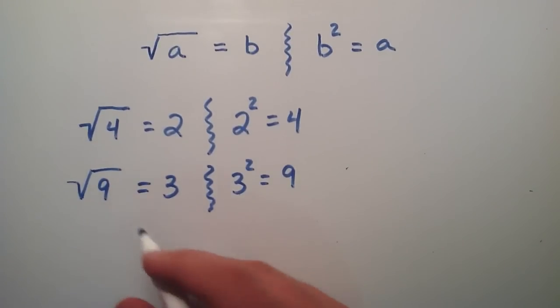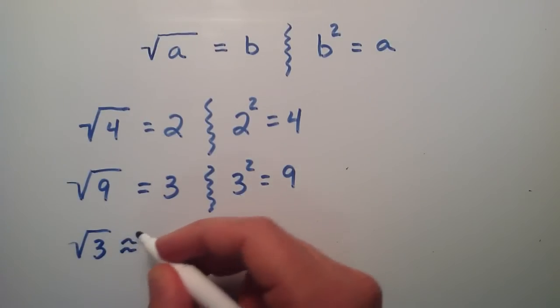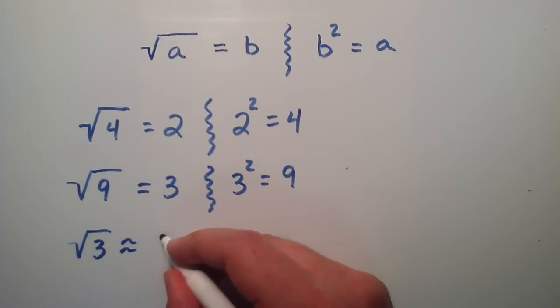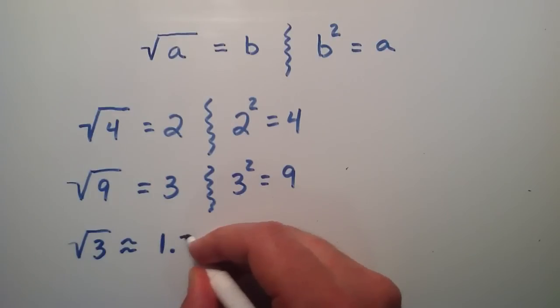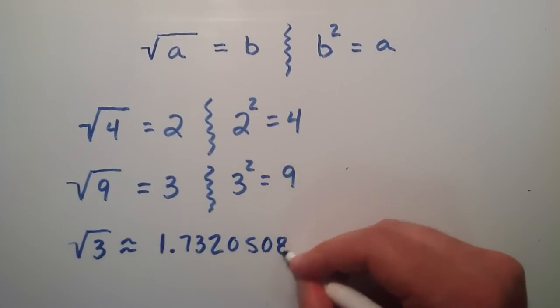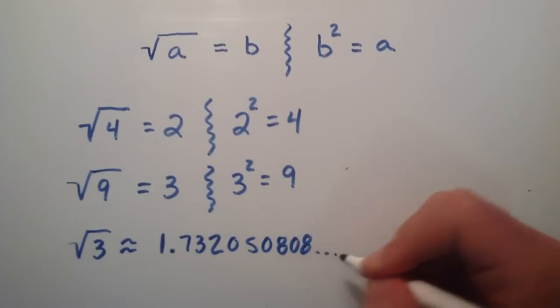So what happens if we don't have something that's quite as neat as this? What if we had the square root of 3? Well, the square root of 3 doesn't turn out to be a nice number. So I went ahead and plugged this in on my calculator, and the square root of 3 is approximately equal to 1.732050808, and it keeps on going.